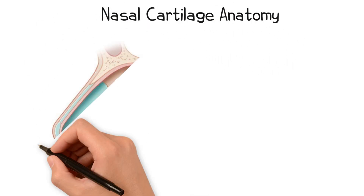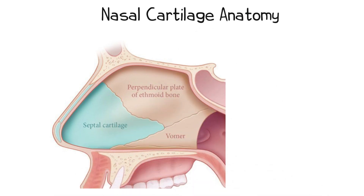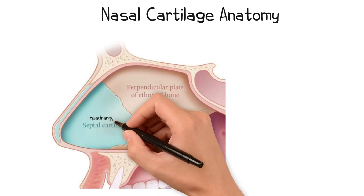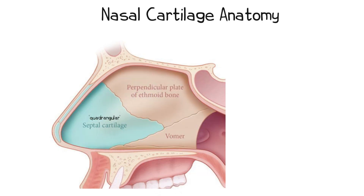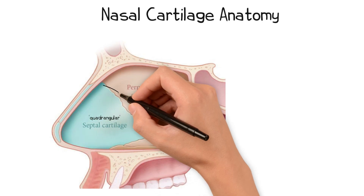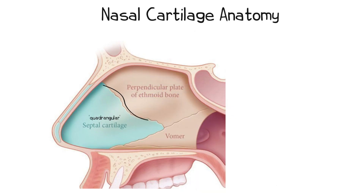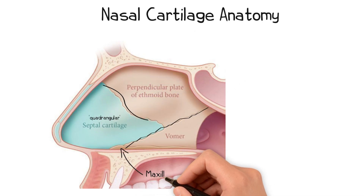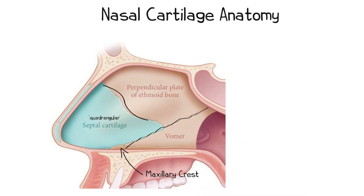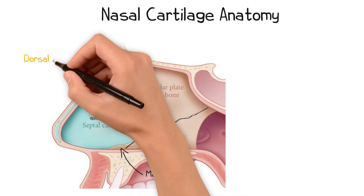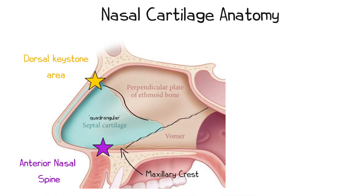The nasal septum separates the left and right nasal cavities. Structurally, it comprises a bony portion posteriorly and a cartilaginous portion anteriorly. The quadrangular cartilage articulates with the perpendicular plate of the ethmoid bone posteriorly and the vomer posteriorly, while resting inferiorly upon the maxillary crest. The quadrangular cartilage attaches to the facial skeleton at two crucial points: superiorly at the dorsal keystone area, and inferiorly at the anterior nasal spine.